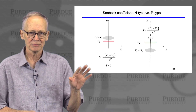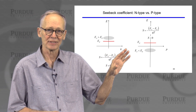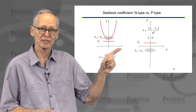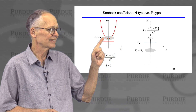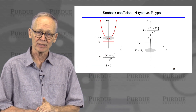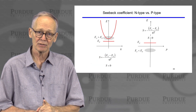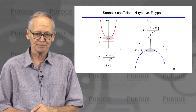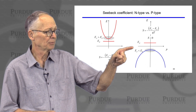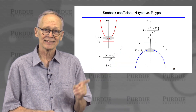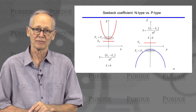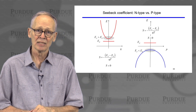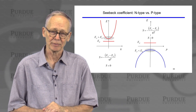We can point out the difference in sign. In an n-type semiconductor the Seebeck coefficient is negative. Whenever the states that carry the current are predominantly above the Fermi energy, we get a negative Seebeck coefficient. In a p-type semiconductor, the Fermi level is above the top of the valence band, so the states that carry the current are below the Fermi level. When the states that carry the current are below the Fermi level, we have a positive Seebeck coefficient for a p-type semiconductor.